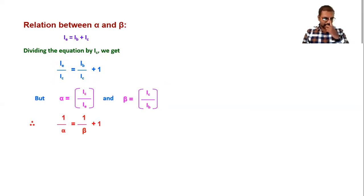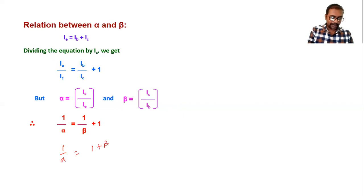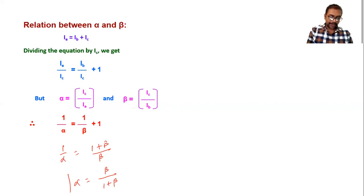From 1/α = 1/β + 1, we get 1/α = (1 + β)/β, so α = β/(1 + β). This is the relation between alpha and beta. Similarly, rearranging gives 1/β = 1/α − 1 = (1 − α)/α, so β = α/(1 − α). These are the two expressions relating alpha and beta.